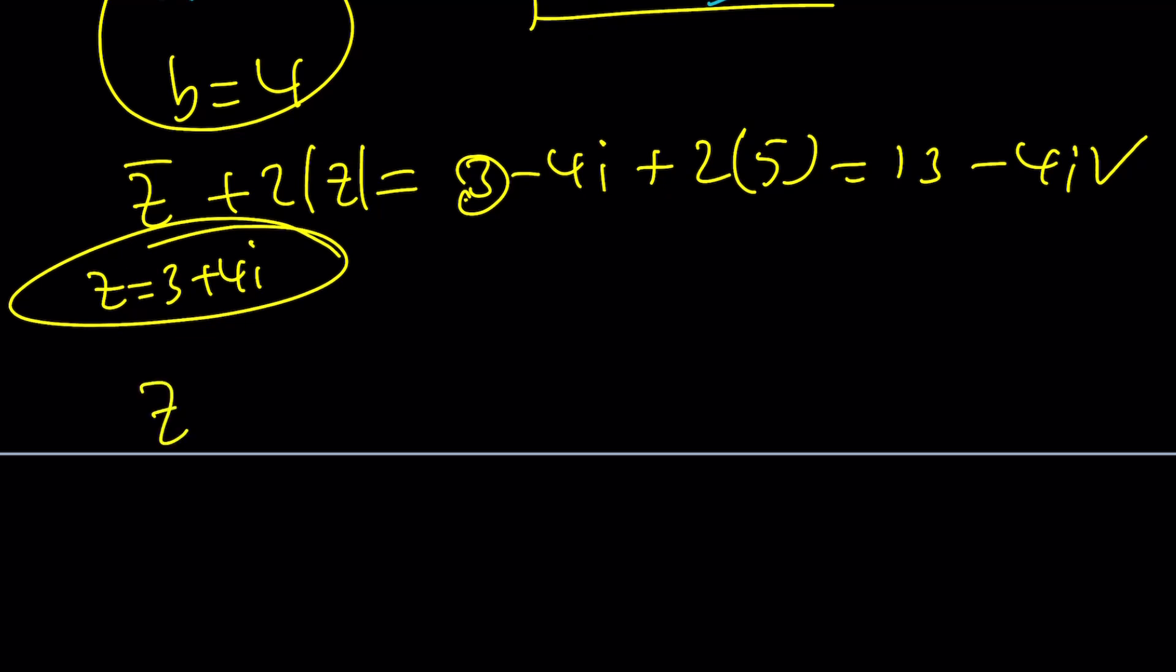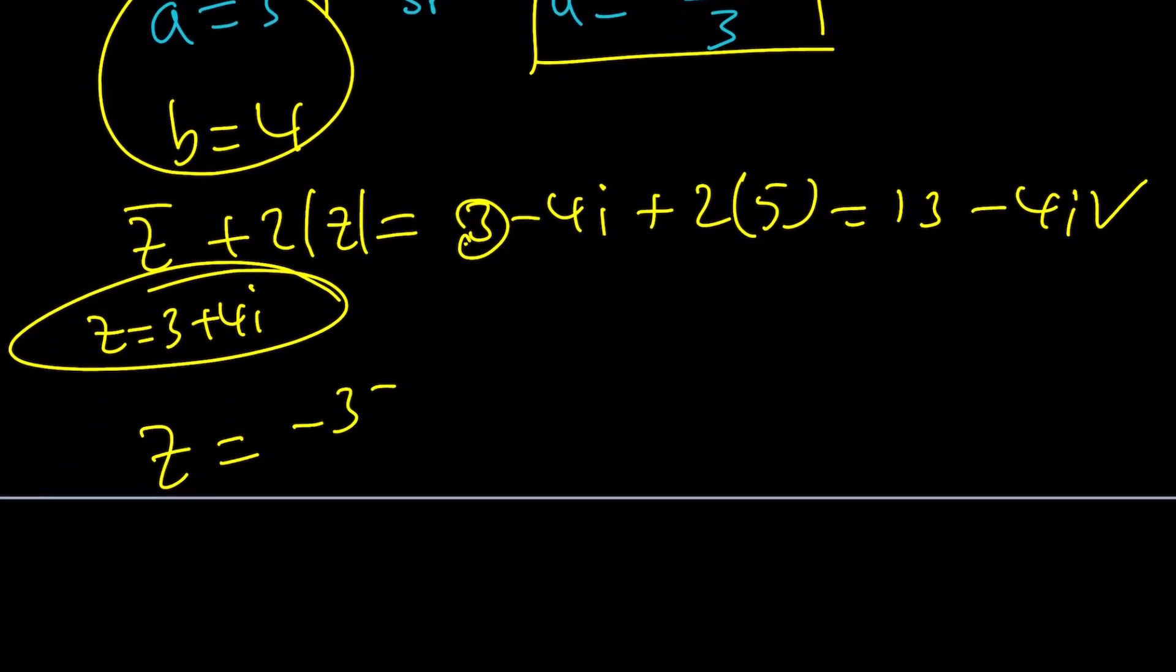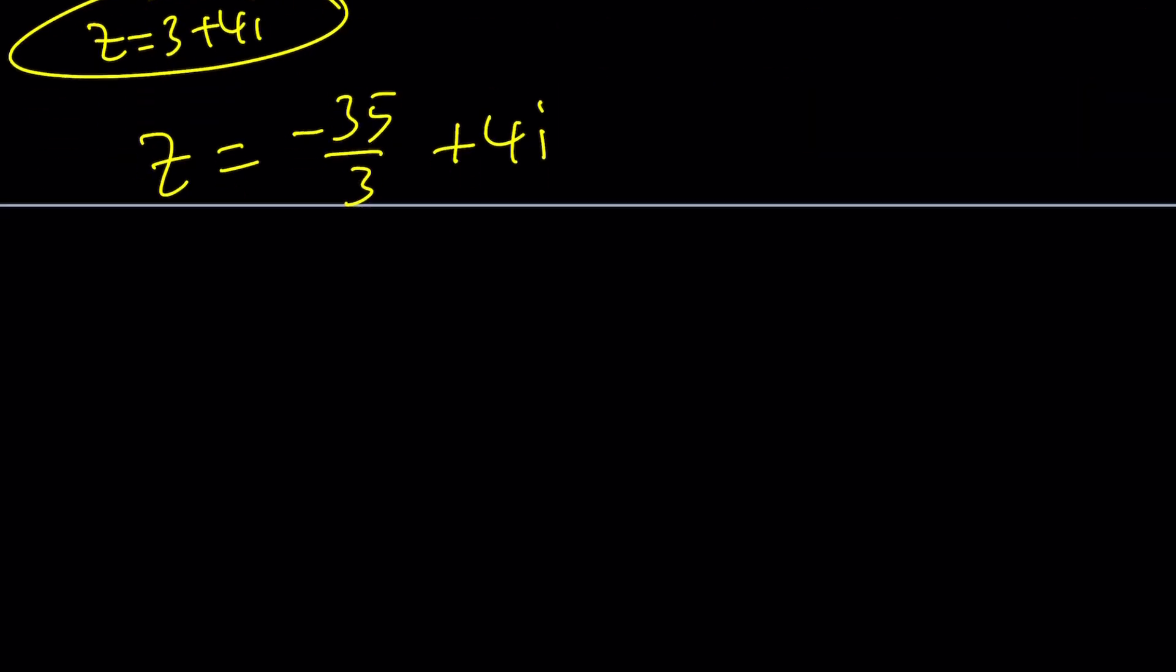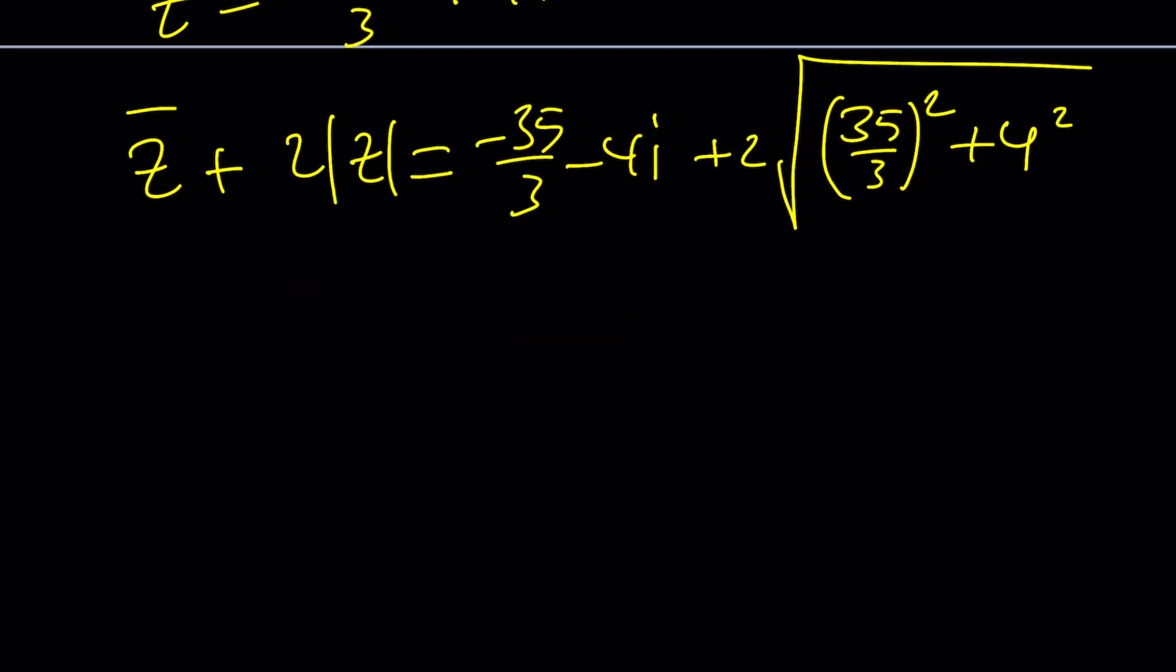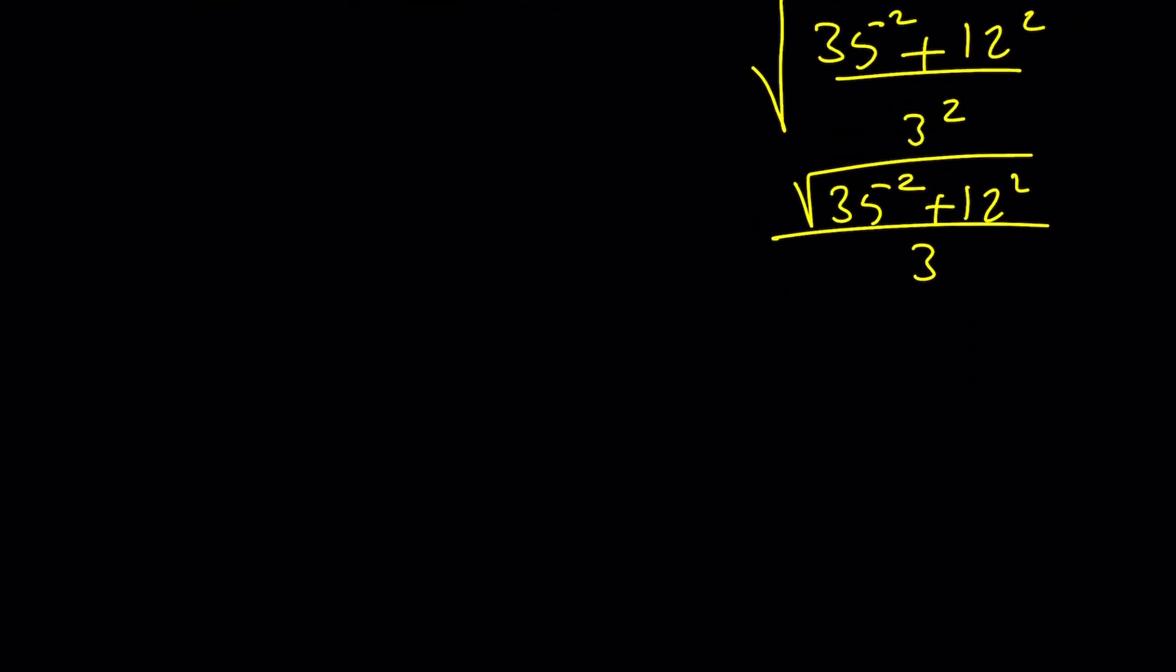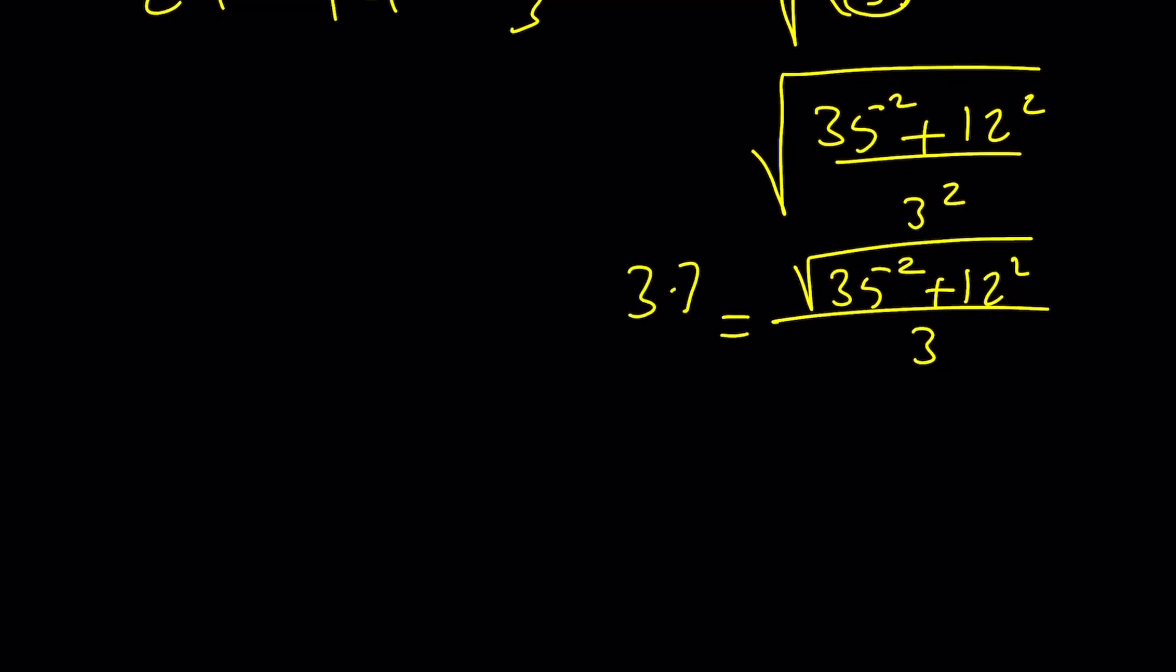On the other hand, if z is this weird number negative 35 over 3 plus 4i, is this really going to work? Let's check it out. Here's what I found. The z bar is going to be negative 35 over 3 minus 4i, plus 2 times the absolute value. What is the absolute value of this number? 35 over 3 squared plus 4 squared. When I expanded this inside the radical I got this: 35 squared plus 3 squared times 4 squared which is 12 squared divided by 3 squared, and I square root it. The bottom is fine because it's just 3. But what about the top? Is that an integer? Yes. This actually happens to be 37.